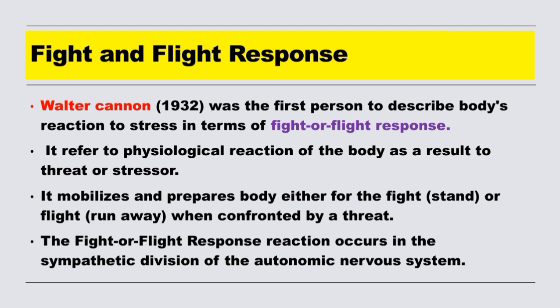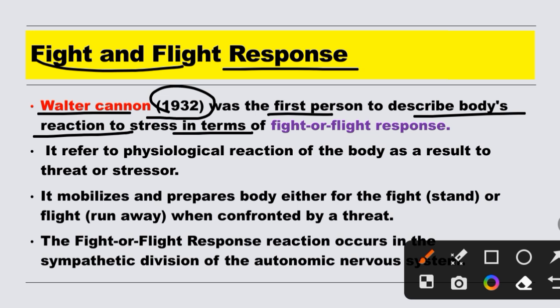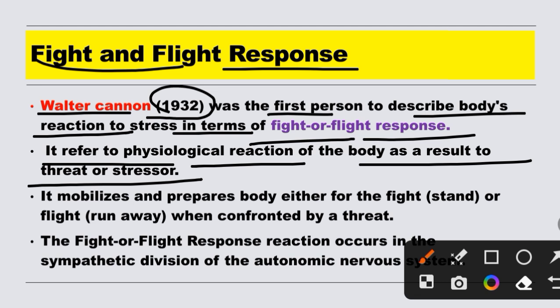Now we will see how our body responds when stress happens. The first response is the fight and flight response. A scientist named Walter Cannon in 1932 was the first person to describe how the body reacts to stress, and he named it the fight or flight response. It refers to the physiological reaction of the body as a result of a threat or stressor.